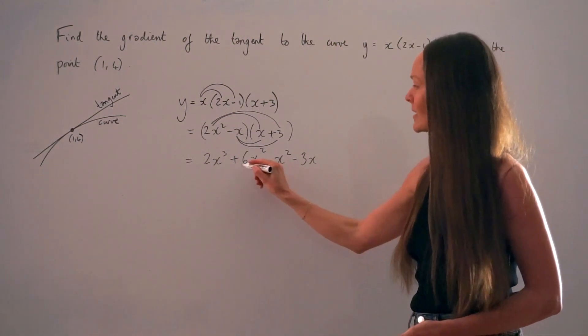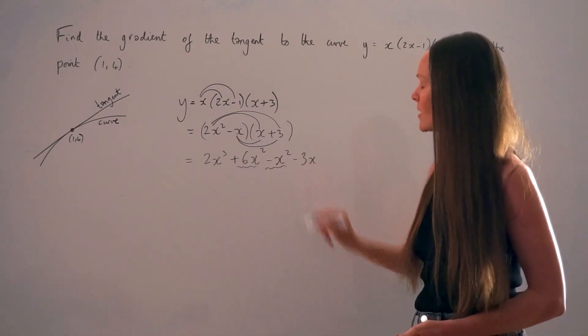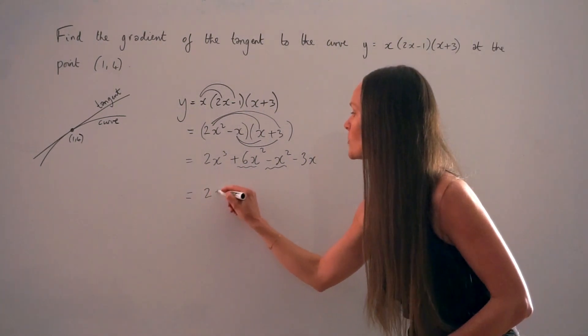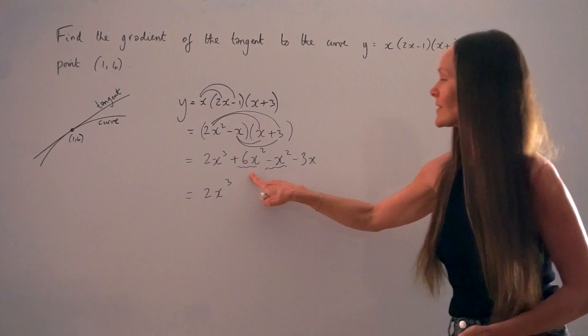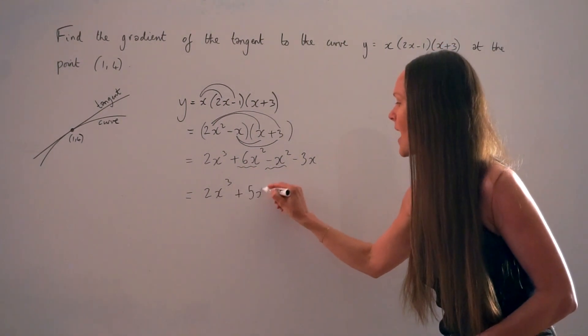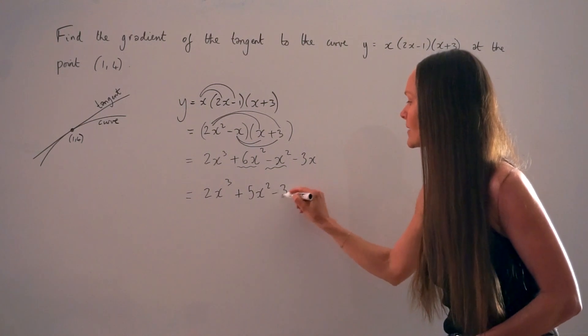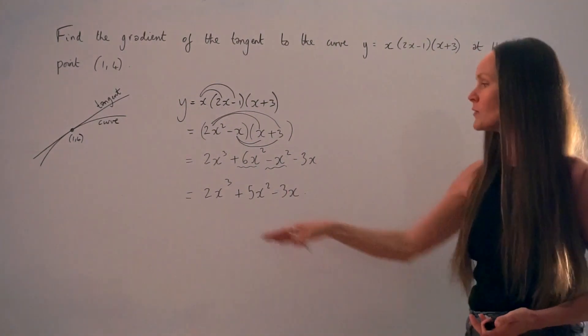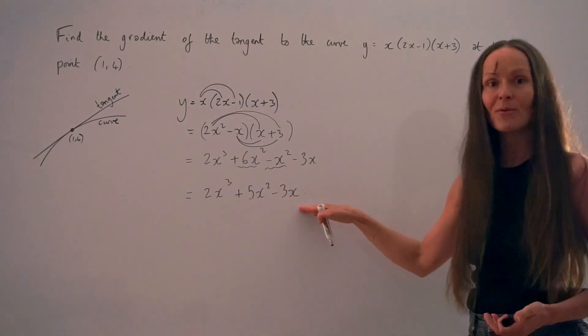OK, so I can see there are two like terms here, so I can simplify the x squared terms. So 2x cubed stays the same. 6x squared take away 1x squared is 5x squared. And then we have negative 3x at the end. So this is still the equation of the curve. I've just expanded the brackets and simplified.